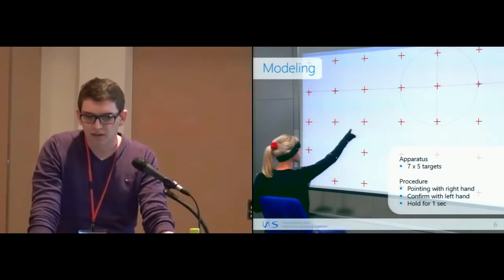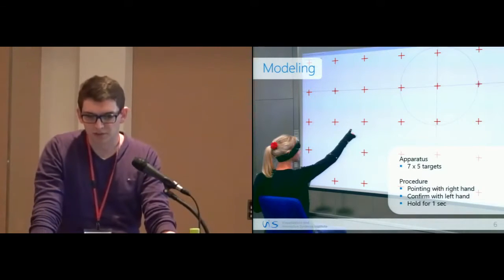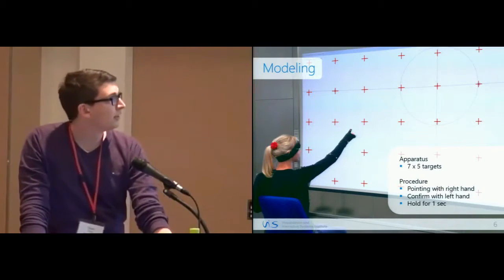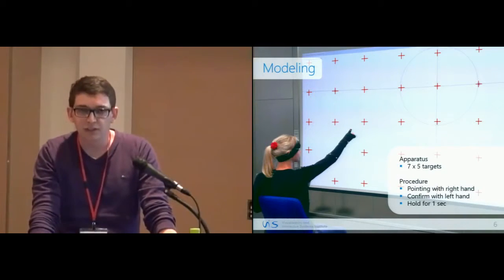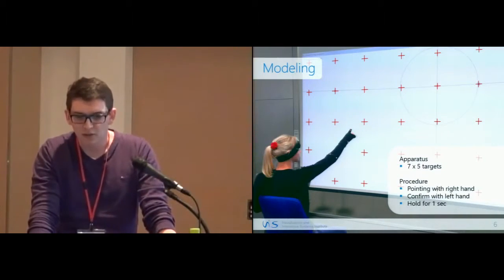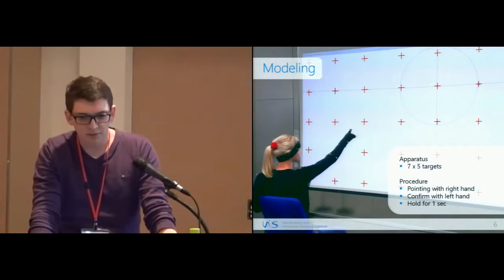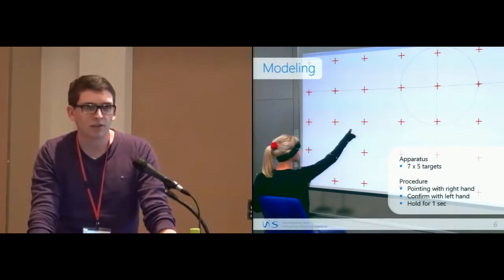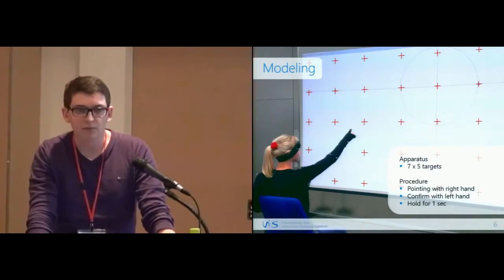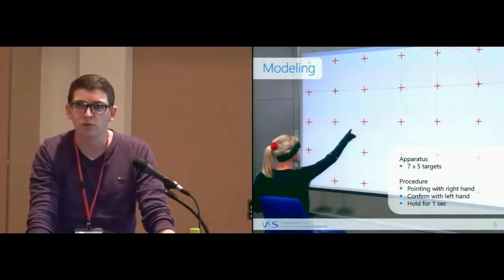To build the model, we collected user data with an experiment. Here you see the setup with the 7x5 grid targets where the participants had to point to. The procedure was that the participant had to point with their right arm onto the target, confirm with the left hand on the presenter, and then hold for one second.